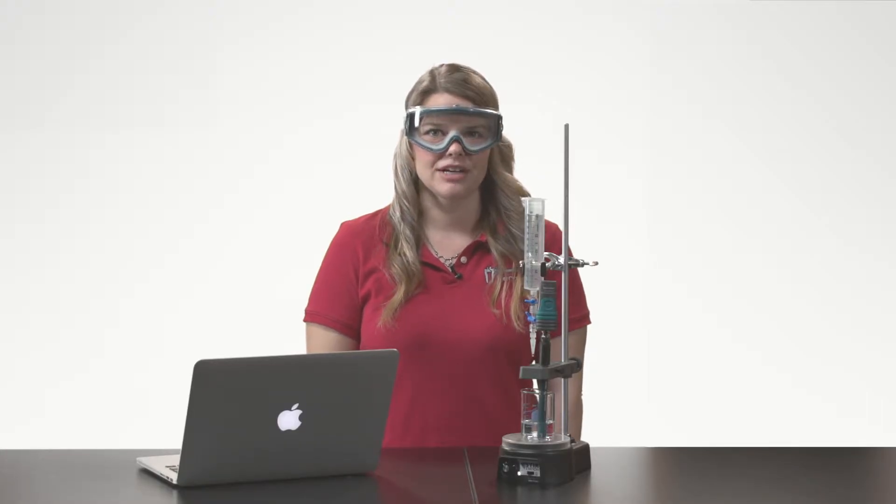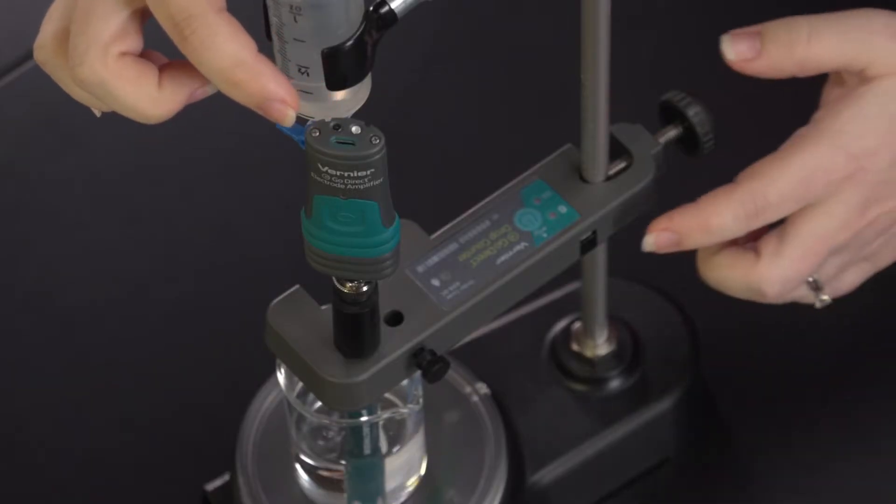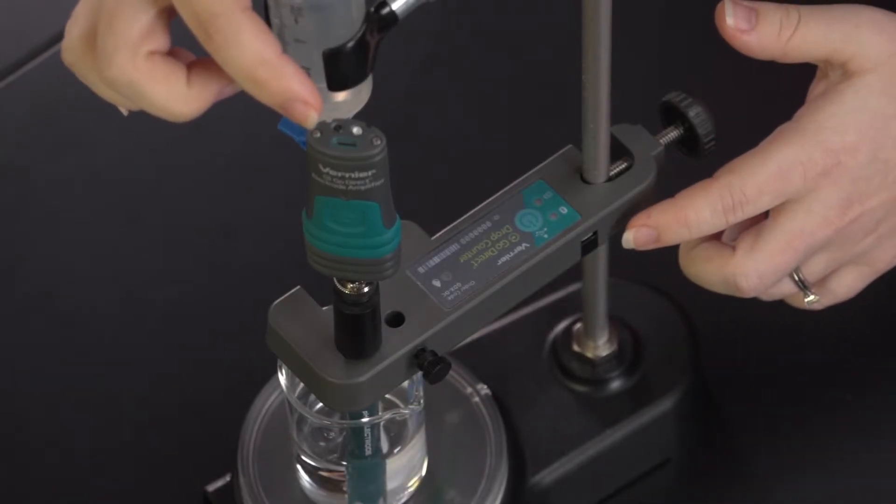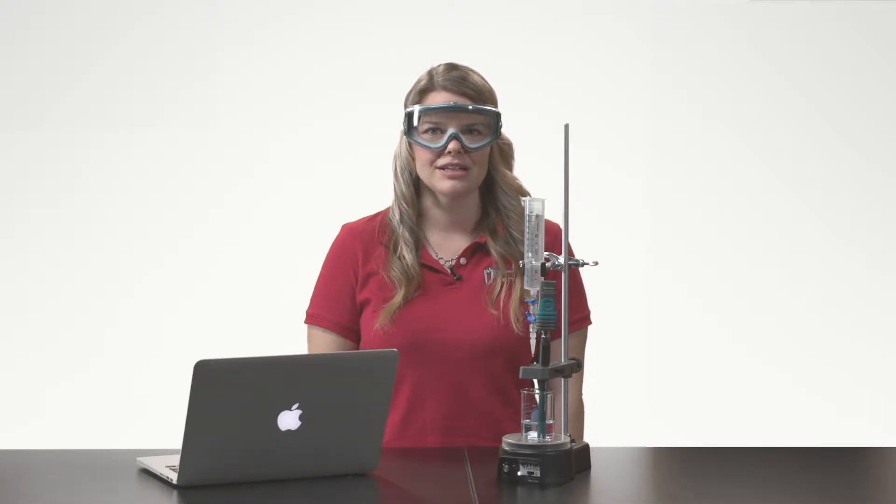The GoDirect pH sensor and drop counter can be connected via USB or via Bluetooth to your platform. The platform can be a Chromebook, Mac computer, Windows computer, iOS, or Android device. To get started, make sure you have downloaded the Graphical Analysis 4 app from our website or from the appropriate app store.